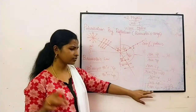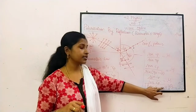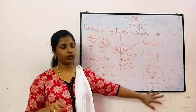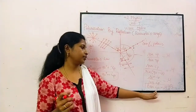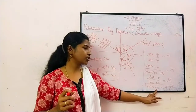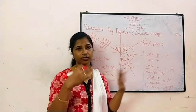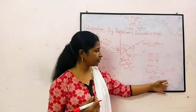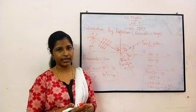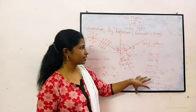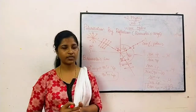Brewster's law states that the tangent of the polarizing angle is equal to the refractive index of the medium. Suppose the refractive index is given, you can easily find out the polarizing angle. It is very simple. This question may be asked for 3 marks, so understand the concept clearly. Hope you understood. Thank you for watching.